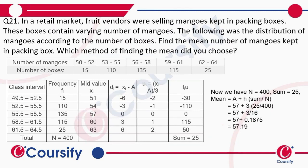In a retail market, fruit vendors were selling mangoes kept in plastic boxes. These boxes contain a very large number of mangoes. The following was the distribution of mangoes according to the number of boxes. Find the mean number of mangoes kept in packing boxes. Which method of finding the mean did you choose?